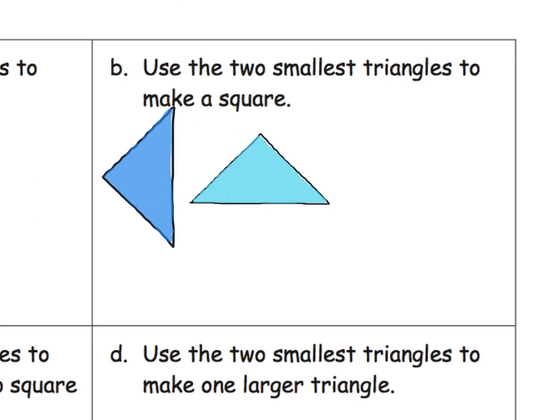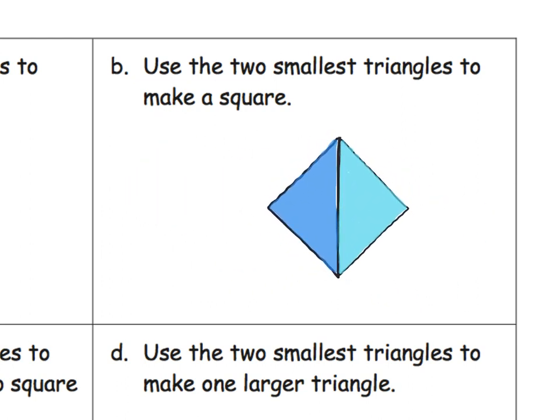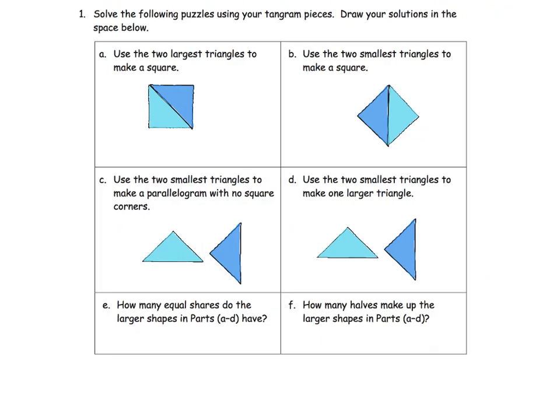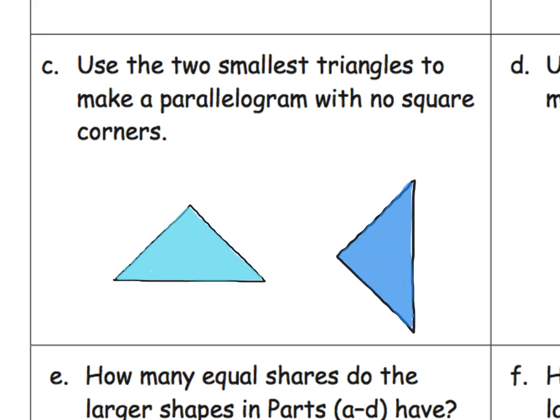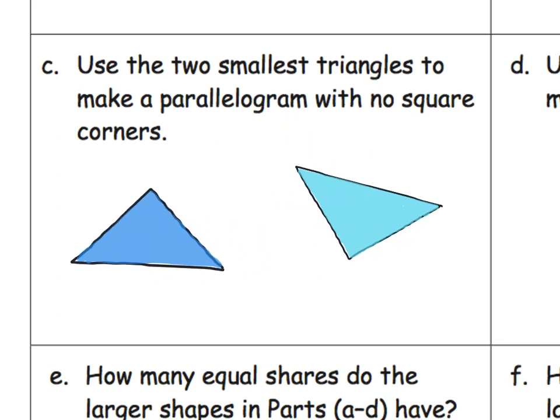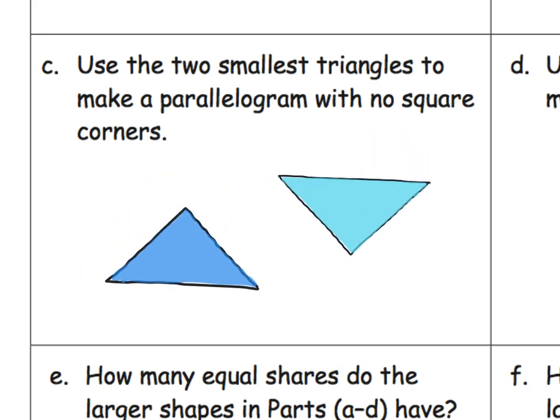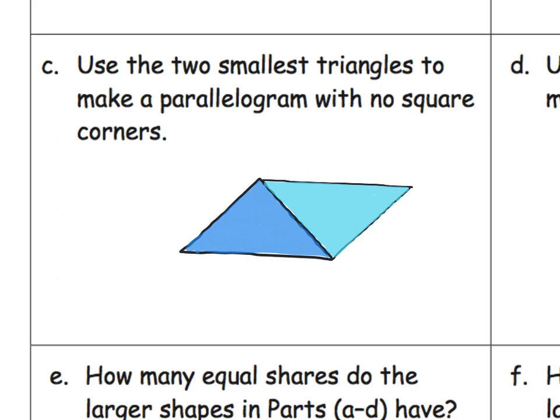Then it says, use the two smallest triangles to make a square. Now, I happen to use the same triangles in both cases. It doesn't matter if we use the smallest here or the largest here. It's all the same because they're triangles. We could just keep going. Use the two smallest triangles to make a parallelogram that has no square corners. There we go. Parallelogram with no square corners. What's the important part of this lesson? The important part is understanding half is a figure that has been cut into two equal-sized pieces. Those are halves.